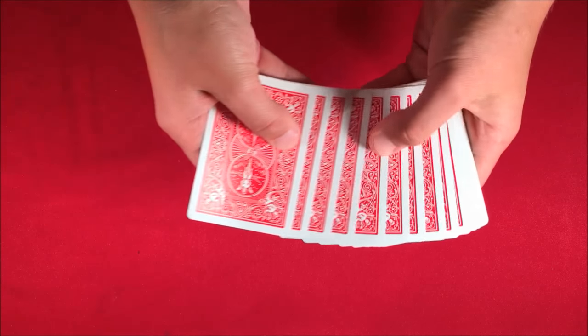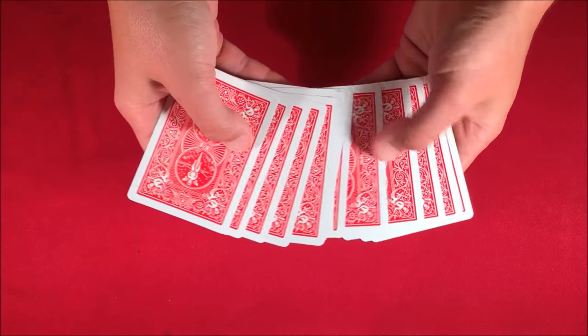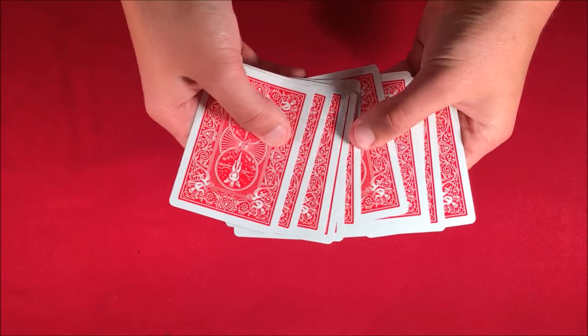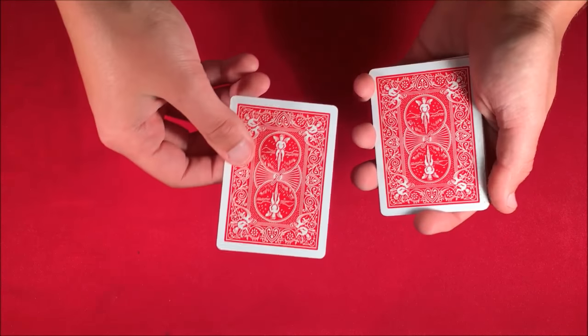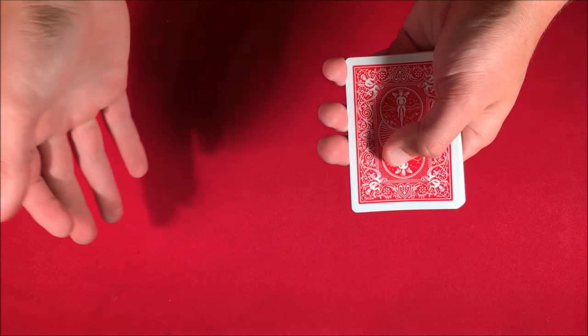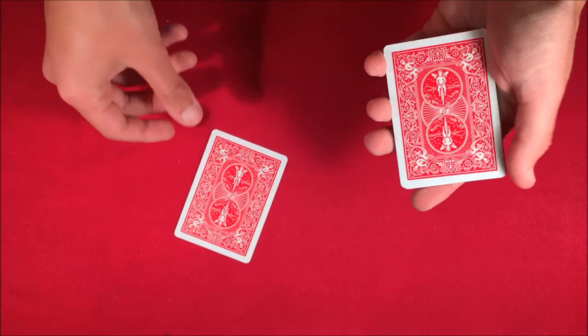So let's say with this random packet of cards here, I'd have you pick a random one. This is a completely random selection. Let's say you were to pick this card from the middle. It really does not matter what card you picked. You could have picked any card. And basically what I want to do here is I'll set your card down.